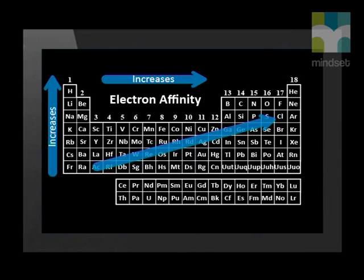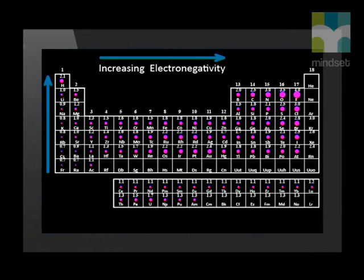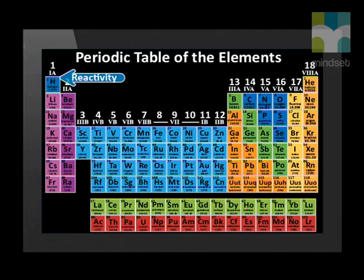We know that the electron affinity increases from left to right across the period, and as we move up a group. We also know that electronegativity increases from left to right across a period, and as we move up a group. Therefore, it is obvious that the reactivity of metals decreases from left to right across the period, and increases down the group. The reactivity of the halogens decreases down the group. The most reactive halogen is fluorine.